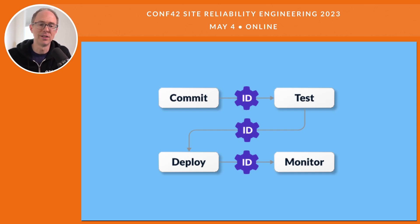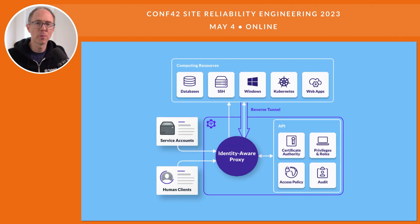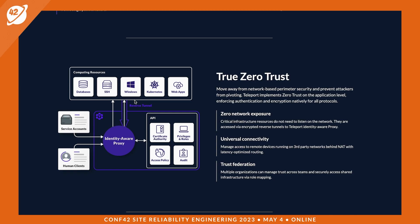Let's bring it all together with an open-source identity-native infrastructure access platform called Teleport. Teleport allows you to access all of your infrastructure in one central location by deploying an identity-aware proxy. Users and service accounts provide identity to gain access to this proxy via WebAuthn — biometrics, service keys — and it integrates with your SSO solution. The Teleport proxy comes equipped with an RBAC system so you can provide roles to decide who has access to what infrastructure: databases, servers, Windows desktops, Kubernetes clusters, and web applications. Teleport has a built-in certificate authority that issues short-lived certificates to access this infrastructure. In this entire setup, there are no passwords, keys, or secrets that can be shared.